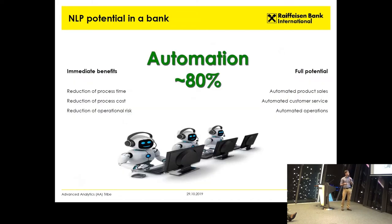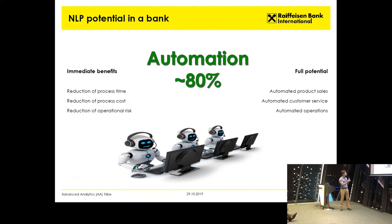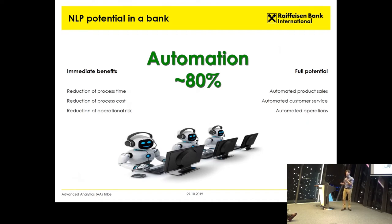In the future, which benefits would it bring? Immediate benefits would, of course, include reduction of processing time, reduction of cost, and reduction of operational risk. With the full potential being complete automation — probably somewhere in the future, not now — but there is potential to fully automate document processing and move from a manually run organization to more or less a robotically run organization.